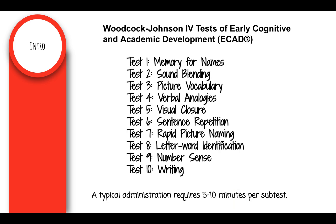It is made up of 10 subtests. Test 1: Memory for Names. Test 2: Sound Blending. Test 3: Picture Vocabulary. Test 4: Verbal Analogies. Test 5: Visual Closure. Test 6: Sentence Repetition. Test 7: Rapid Picture Naming. Test 8: Letter-Word Identification. Test 9: Number Sense. Test 10: Writing. A typical administration requires 5 to 10 minutes per subtest.